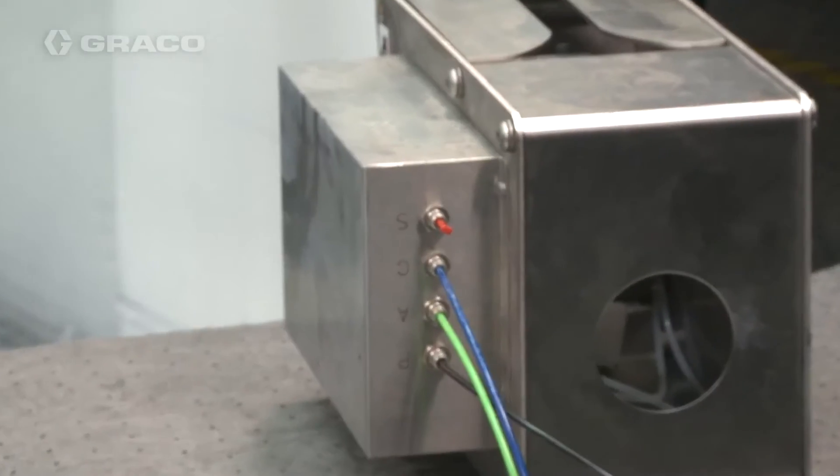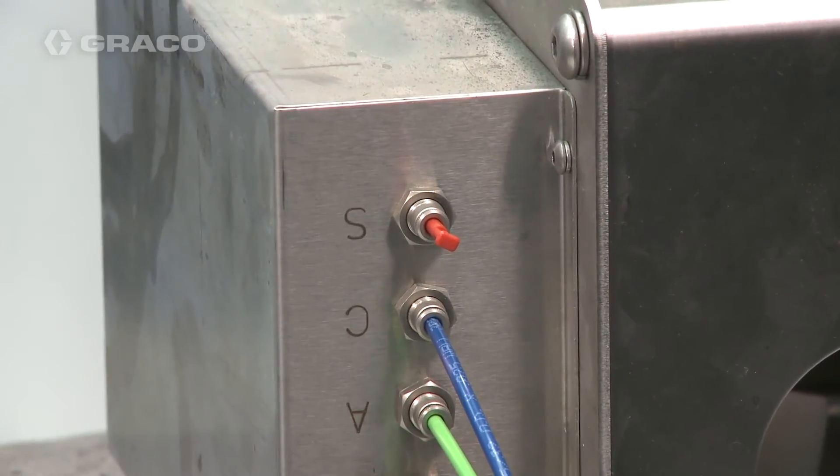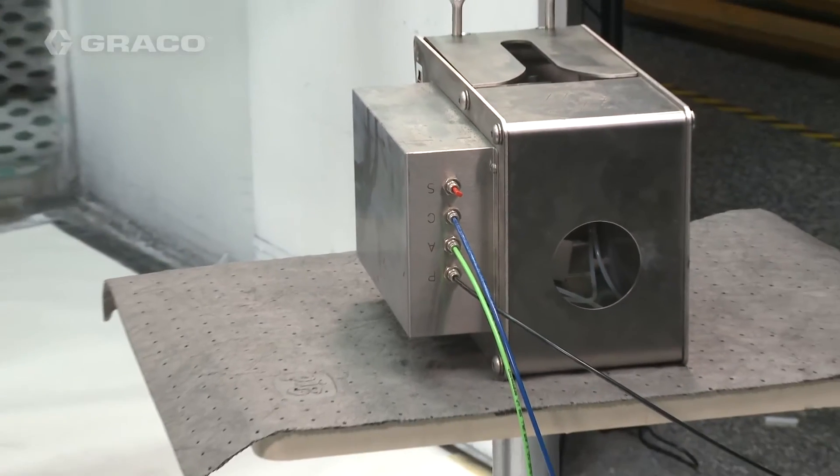Plug port S. Port S is not used since the isolation system controls the air to the gun.